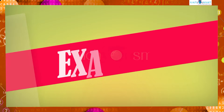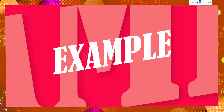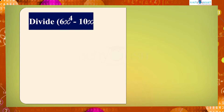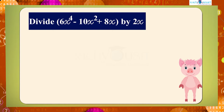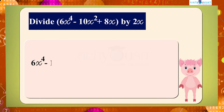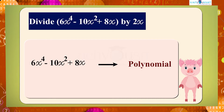Let's take an example. Divide 6x raised to 4 minus 10x squared plus 8x by 2x. Here, 6x raised to 4 minus 10x squared plus 8x is a polynomial and 2x is a monomial.